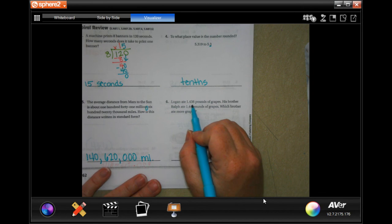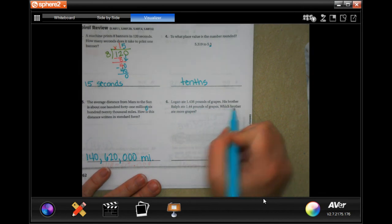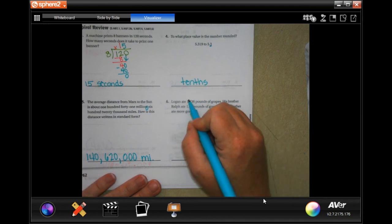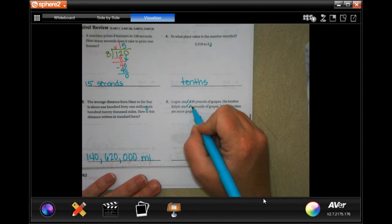All right. Logan ate 1.438 pounds of grapes. His brother Ralph ate 1.44 pounds of grapes. Which brother ate more grapes? Well, they both start with 1. They both have a 4. Now Ralph's has a 4 and Logan's has a 3. So Ralph.